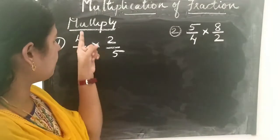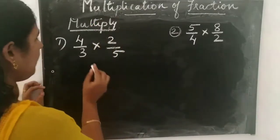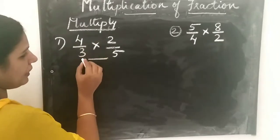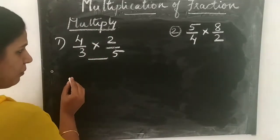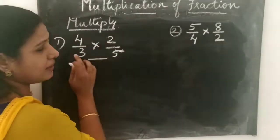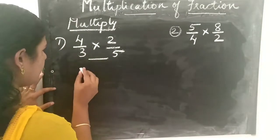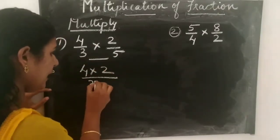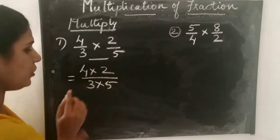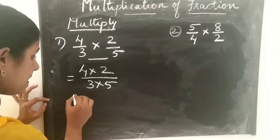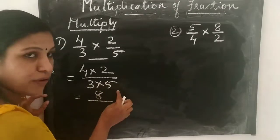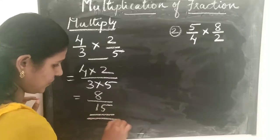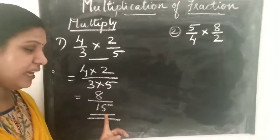Next, multiply 4 by 3 into 2 by 5. Here we write the numerators divided by the denominators. So 4 into 2 divided by 3 into 5. Now 4 into 2 is 8, and 3 into 5 is 15. So we get the answer as 8 by 15.